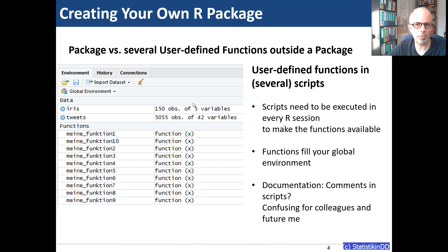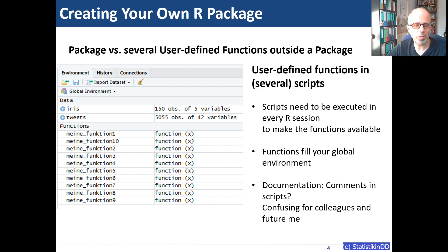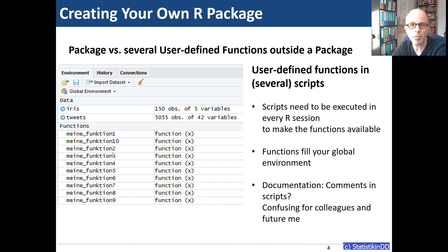You can see in the screenshot that the functions clutter my global environment. I wasn't very creative in naming them — they go from 'my function 1' to 'my function 10' in a German naming scheme. They're sorted alphabetically, so 'function 10' appears between 'function 1' and 'function 2'. Also, every time you restart R in RStudio you need to execute a script to define and make these functions available. And for documentation, you'd have to check the R script for comments or try to understand the code — which can be confusing for colleagues and also for future you.